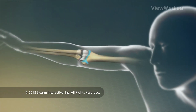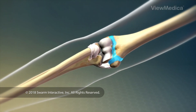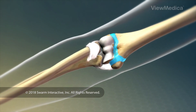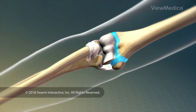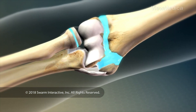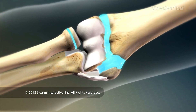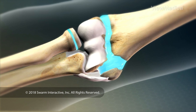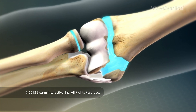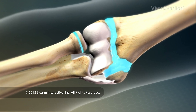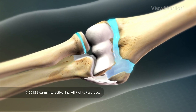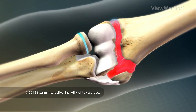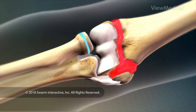Throwing puts a lot of stress on the elbow's ligaments — bands of tissue that stabilize the joint. One of these ligaments attaches to the bony bump on the inner side of the elbow, called the medial epicondyle. As the ligament repeatedly pulls this bump, the nearby growth plate becomes irritated and inflamed, and pieces of bone may begin to tear away.